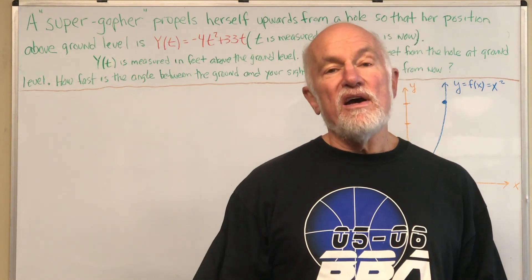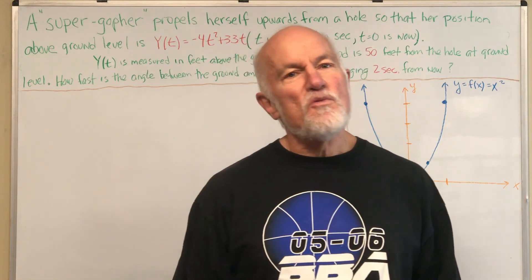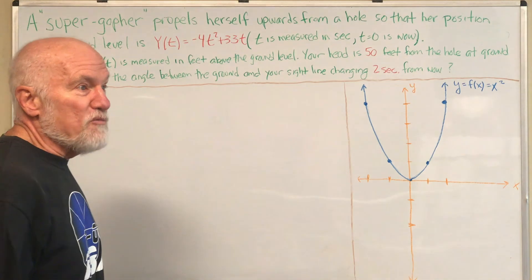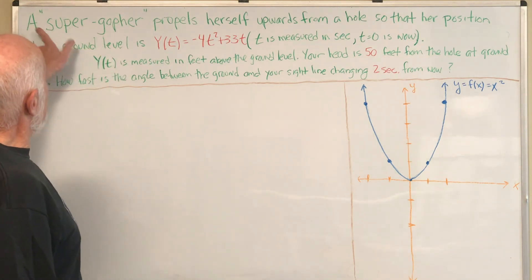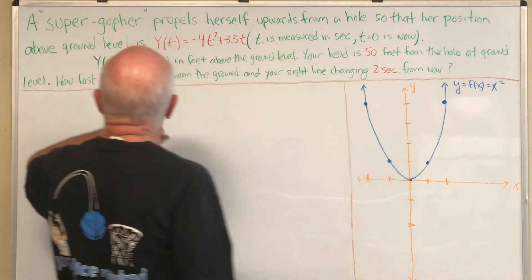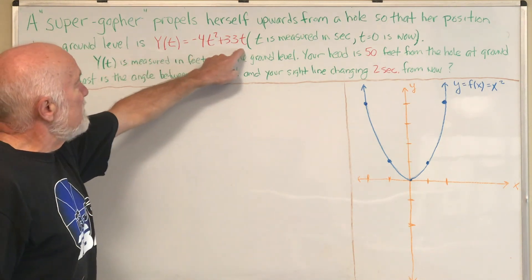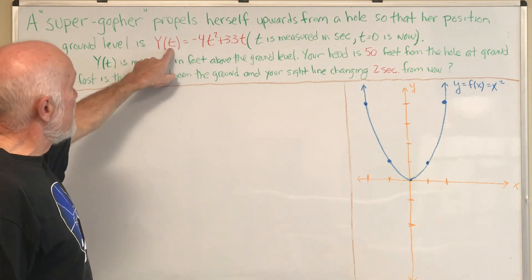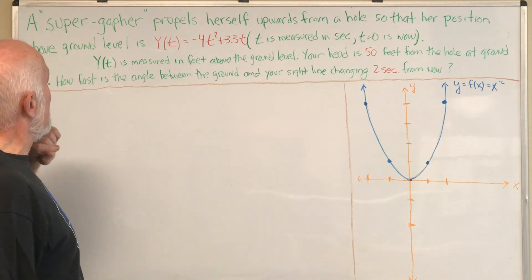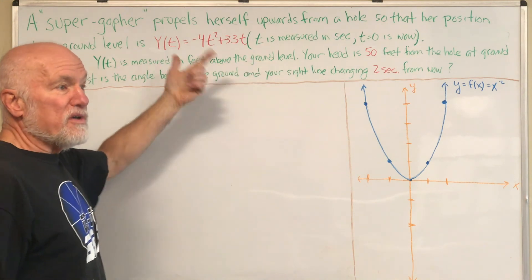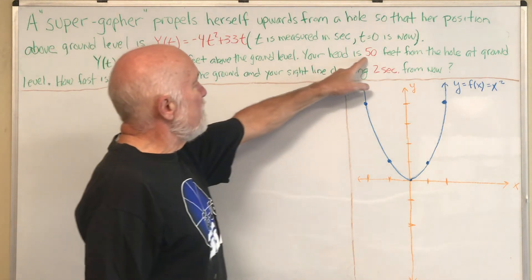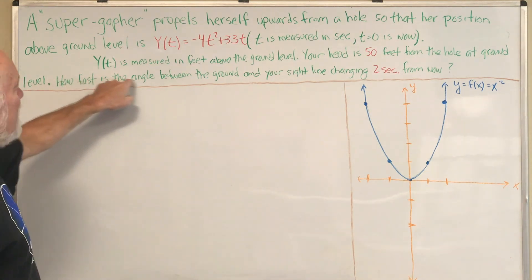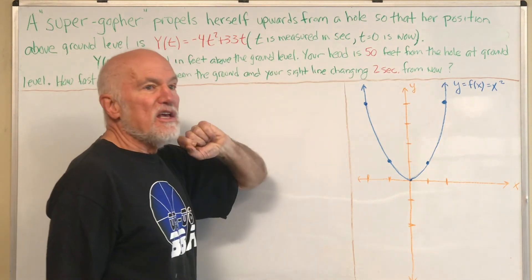Try to see, as we do this problem, how even though all related rate problems seem completely different, they're really done pretty much the same way. This problem involves a super gopher who propels herself upwards from a hole so that her position above ground is given by a function of t in seconds, where t=0 is now. Your head is 50 feet away from the hole at ground level. You want to know how fast the angle between the ground and your sight line changes two seconds from now.